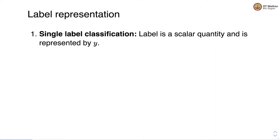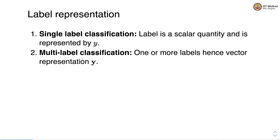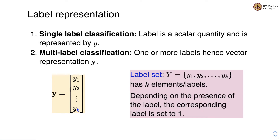In case of single-label classification, the label is a scalar quantity represented by lowercase y. In case of multi-label classification, since there are one or more labels, we use a vector representation, represented by a lowercase boldface letter. The vector y for multi-label classification has k components, where k corresponds to the elements in the label set — y1, y2, all the way up to yk. The corresponding component is set to 1 depending on the presence of that label.